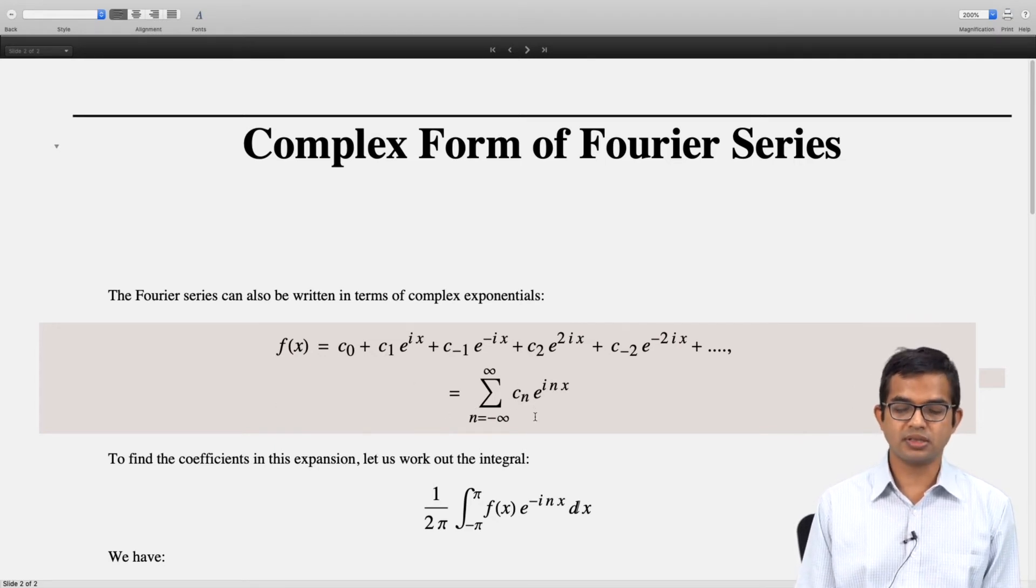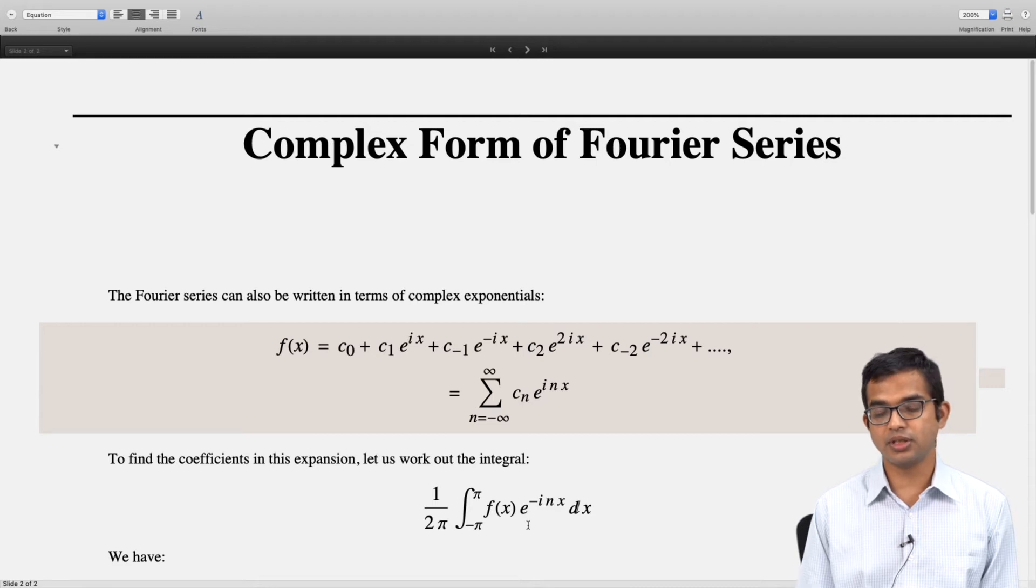To find these coefficients cₙ, let us work this integral out: 1/(2π) times the integral from -π to π of f(x) times e^(-inx) dx.